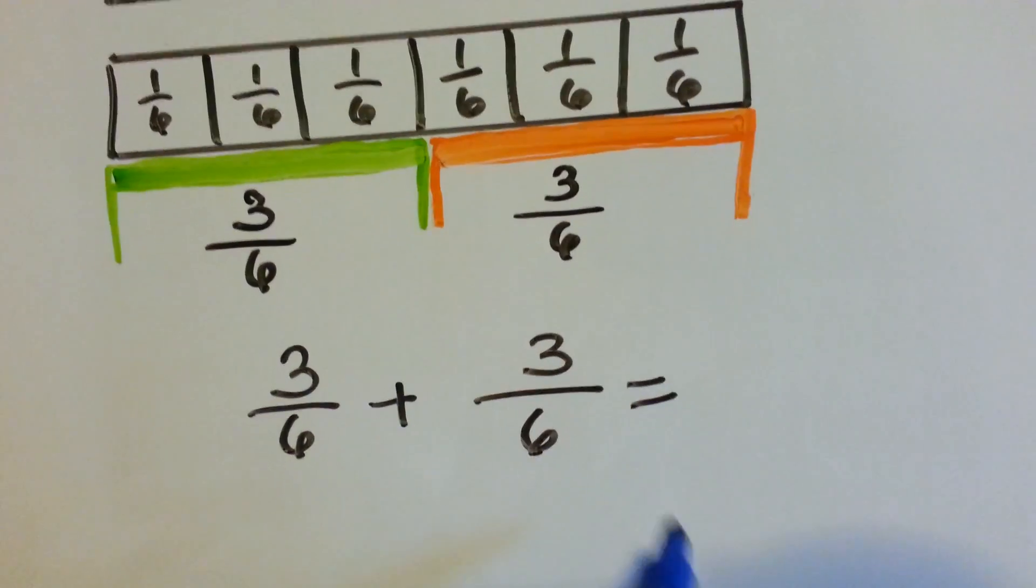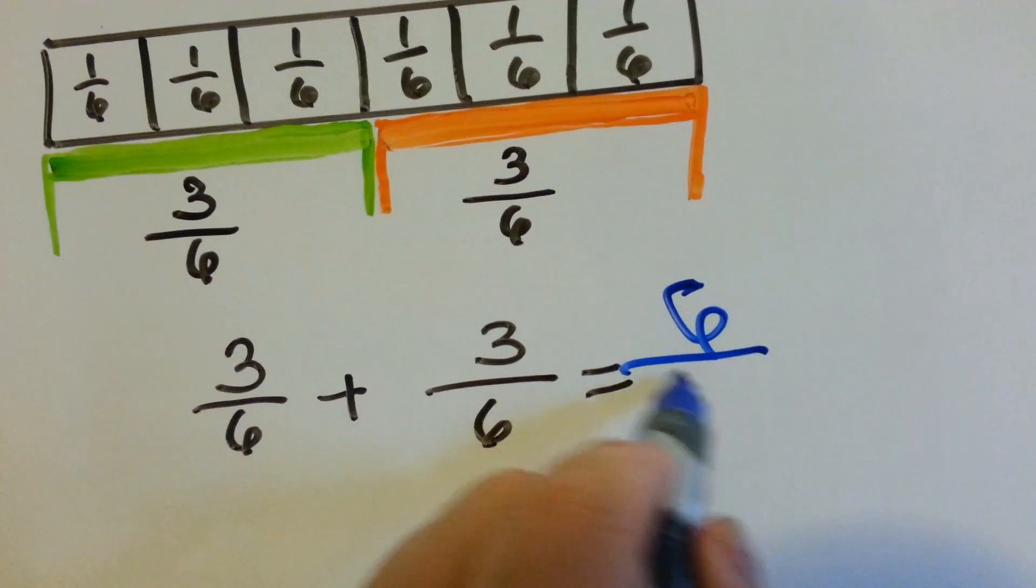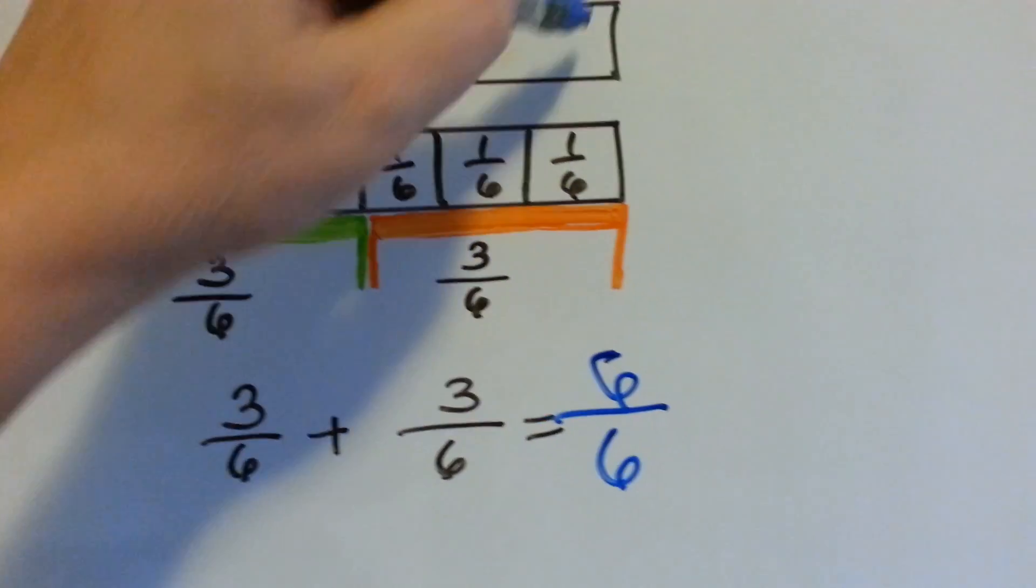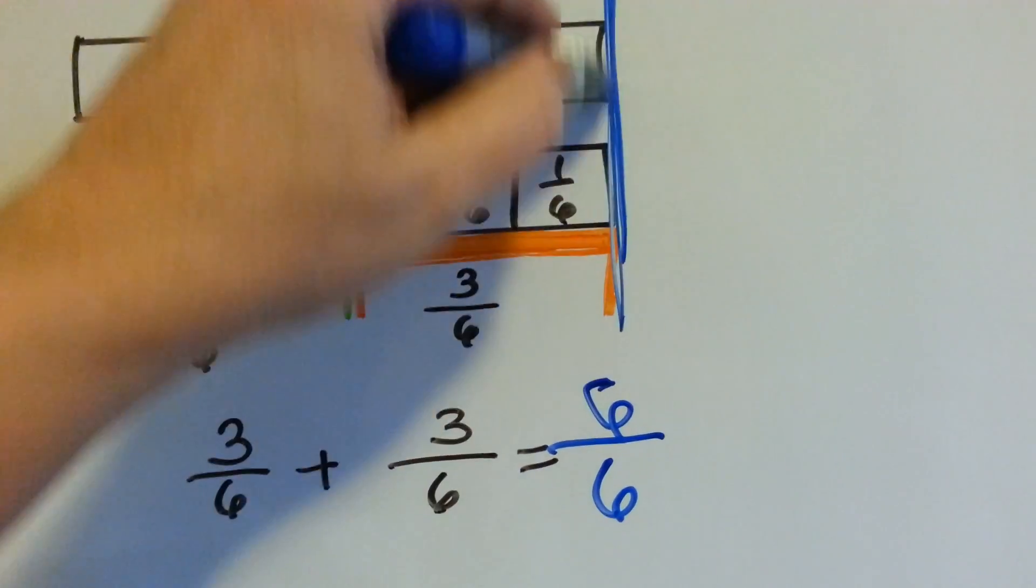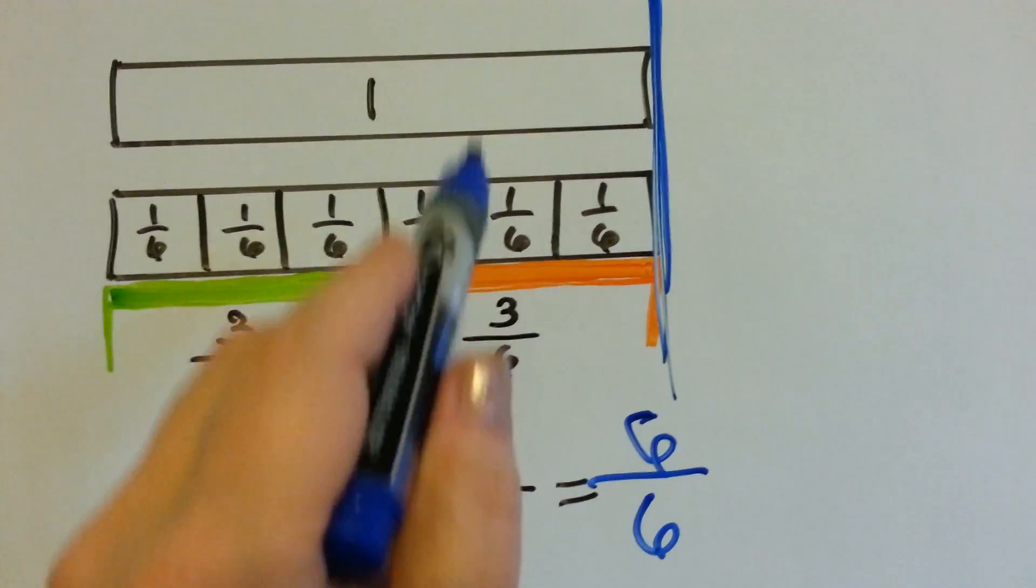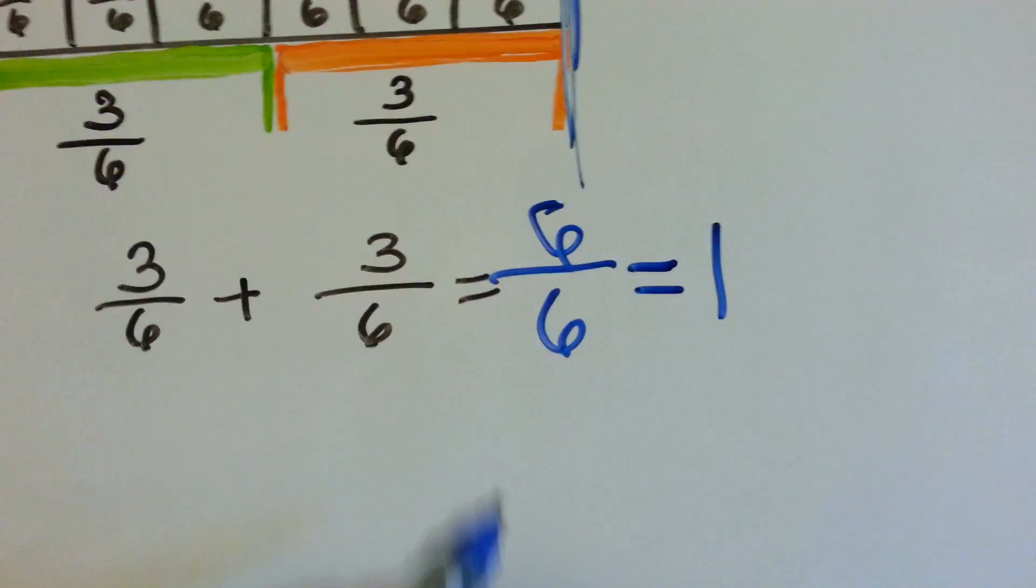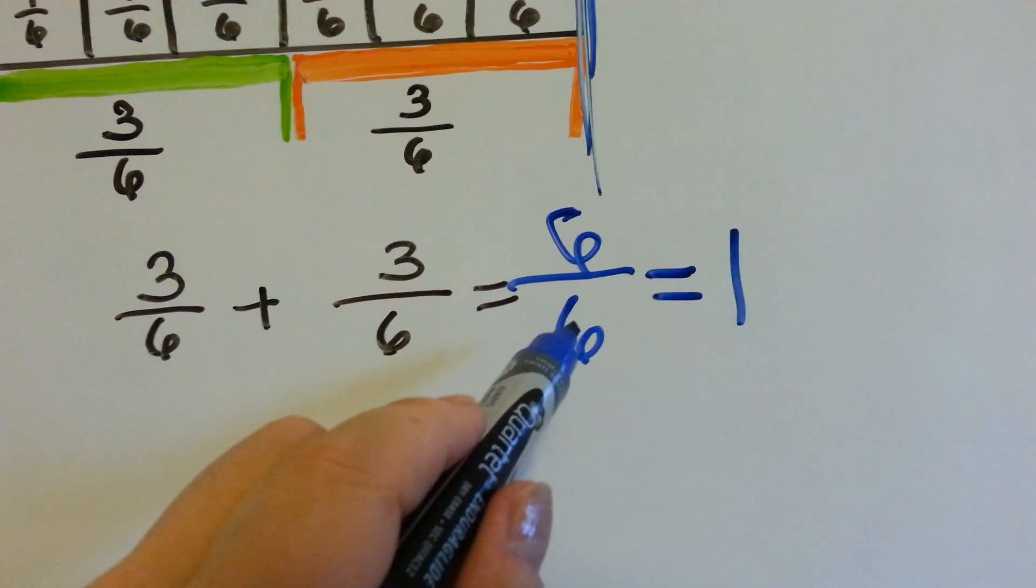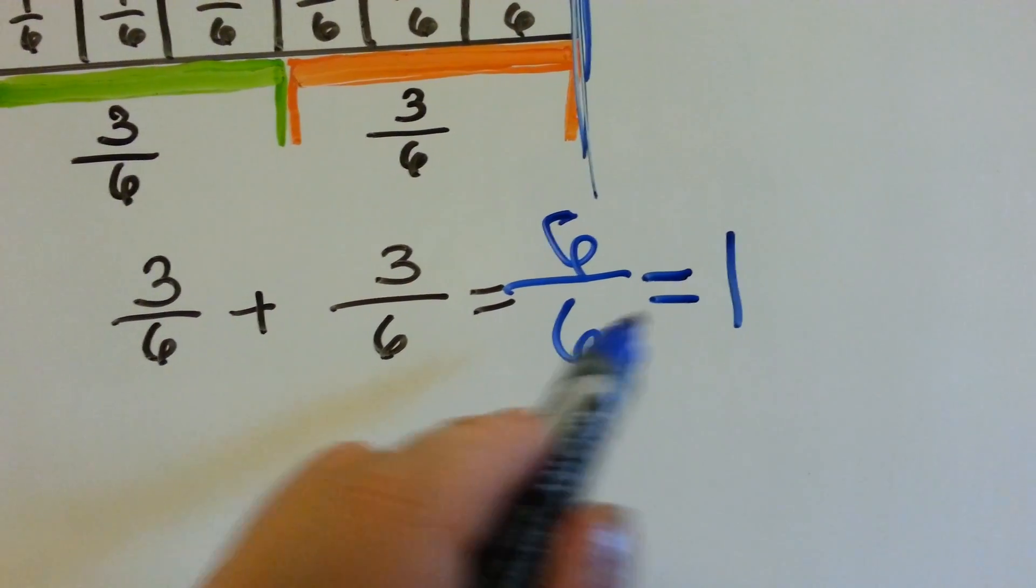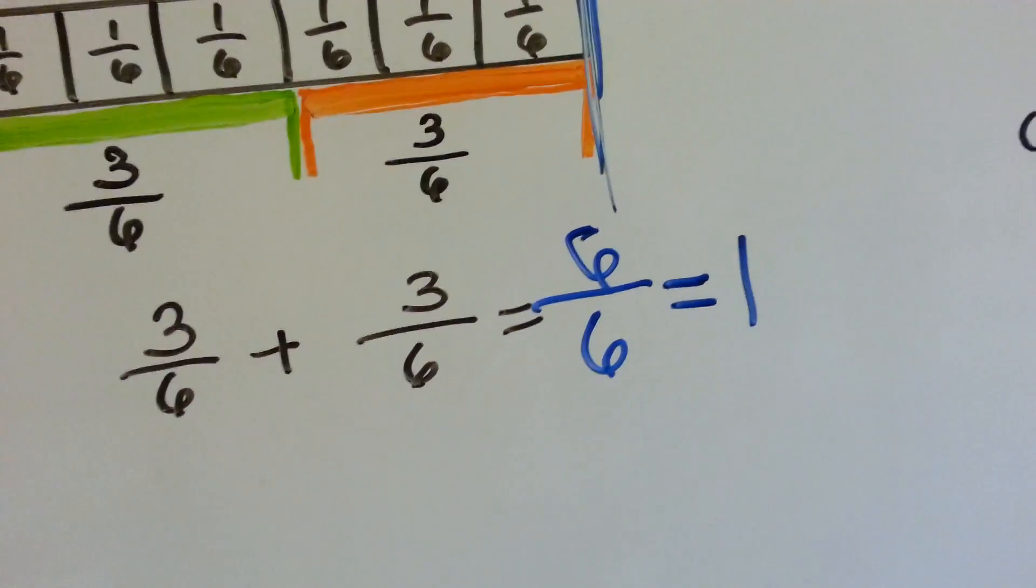1, 2, 3, 4, 5, 6. And if you look, 6 sixths is the same thing as one whole. Whenever a fraction is the same on the top and the bottom, same numerator and denominator, it equals one whole.